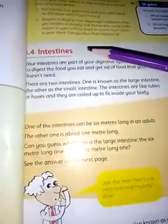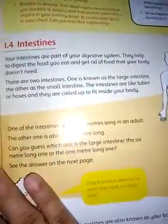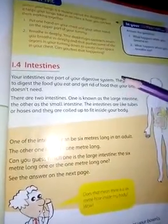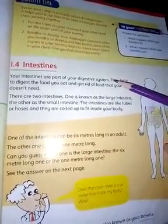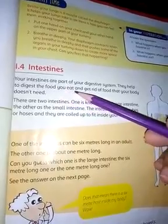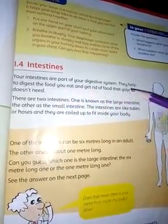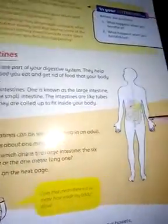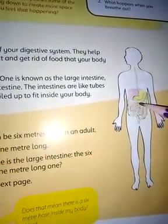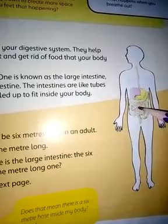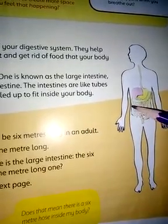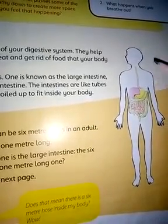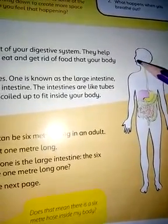The next topic is intestines. Your intestines are part of your digestive system. They help you to digest the food you eat and get rid of food that your body doesn't need. In the diagram, this one is the small intestine and this one is the large intestine — both are parts of our digestive system.